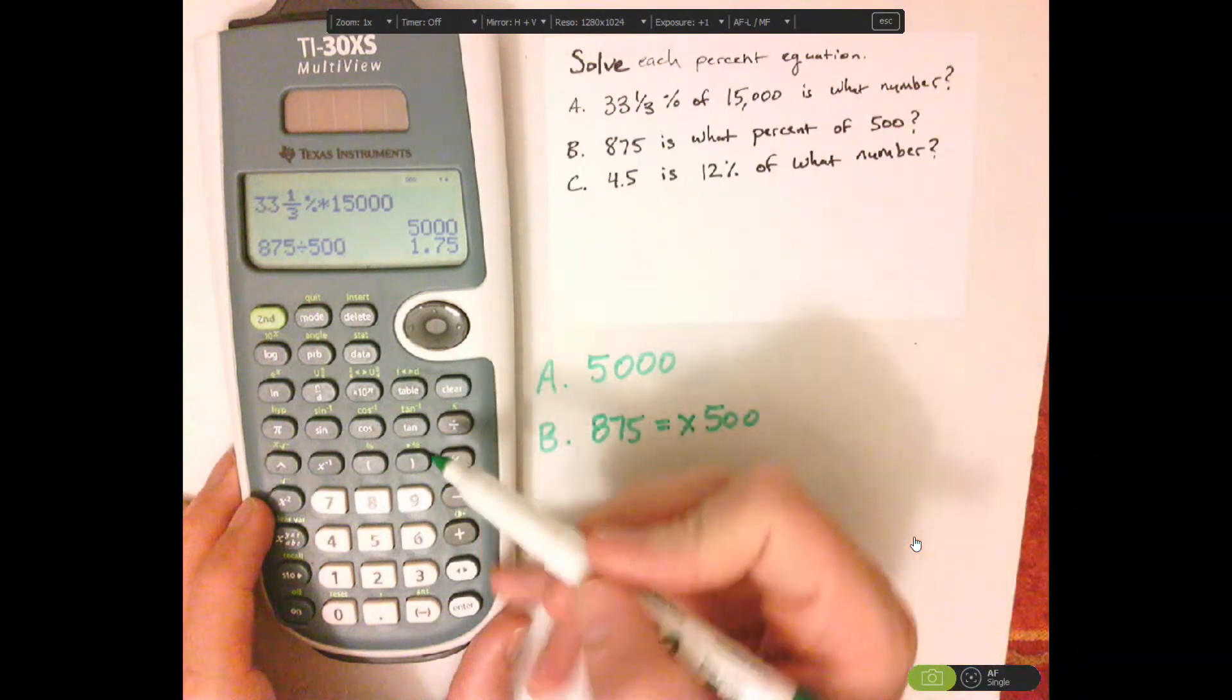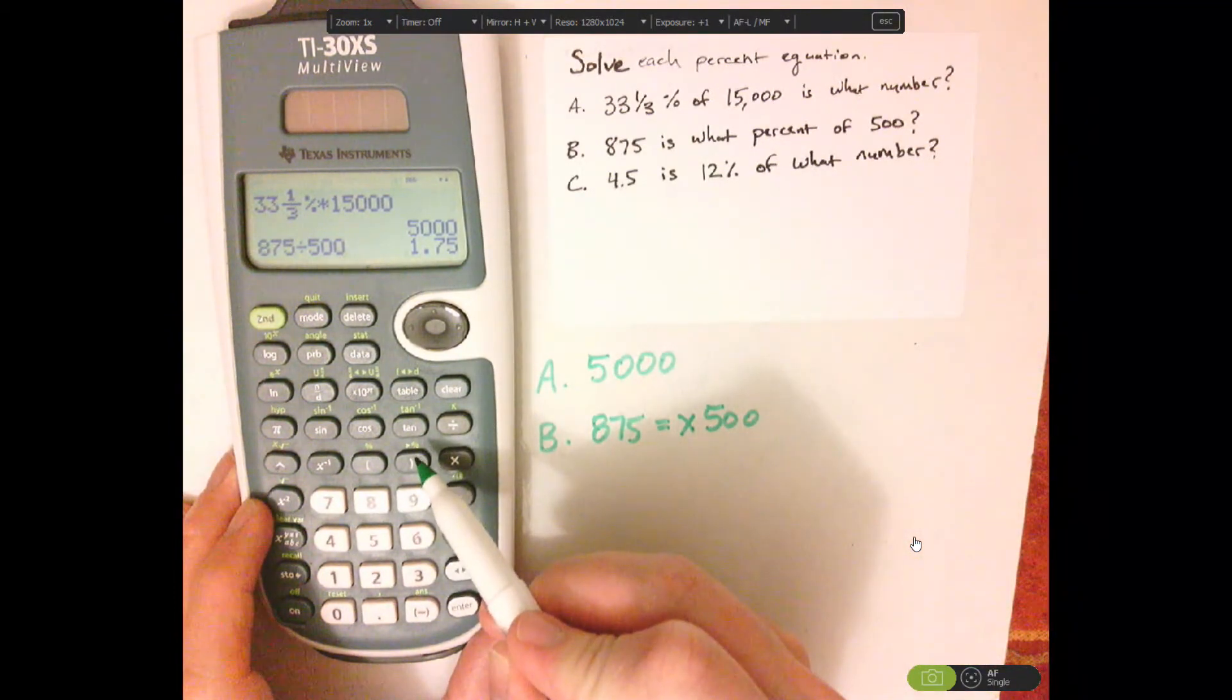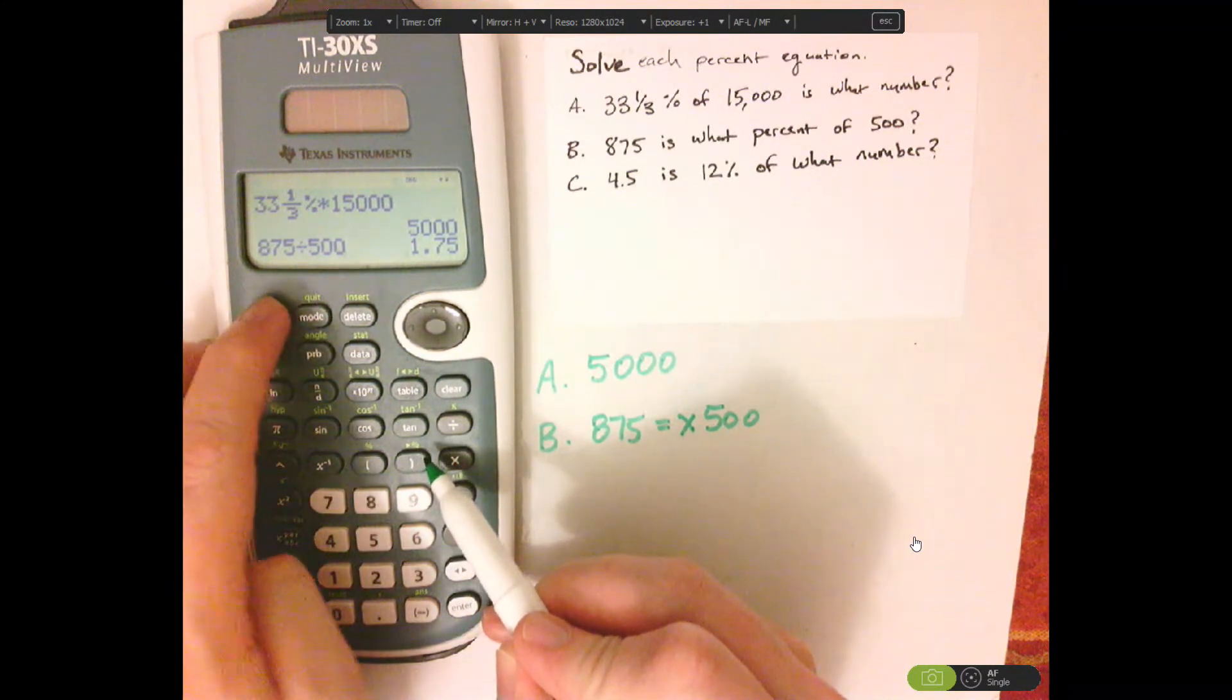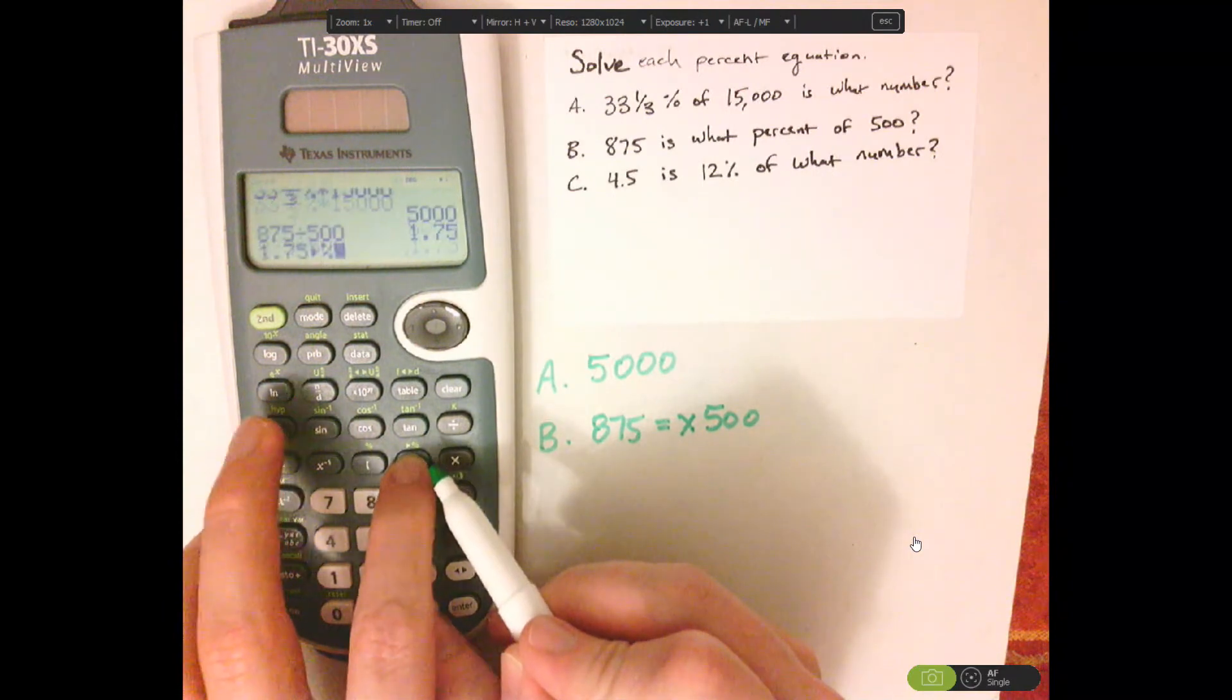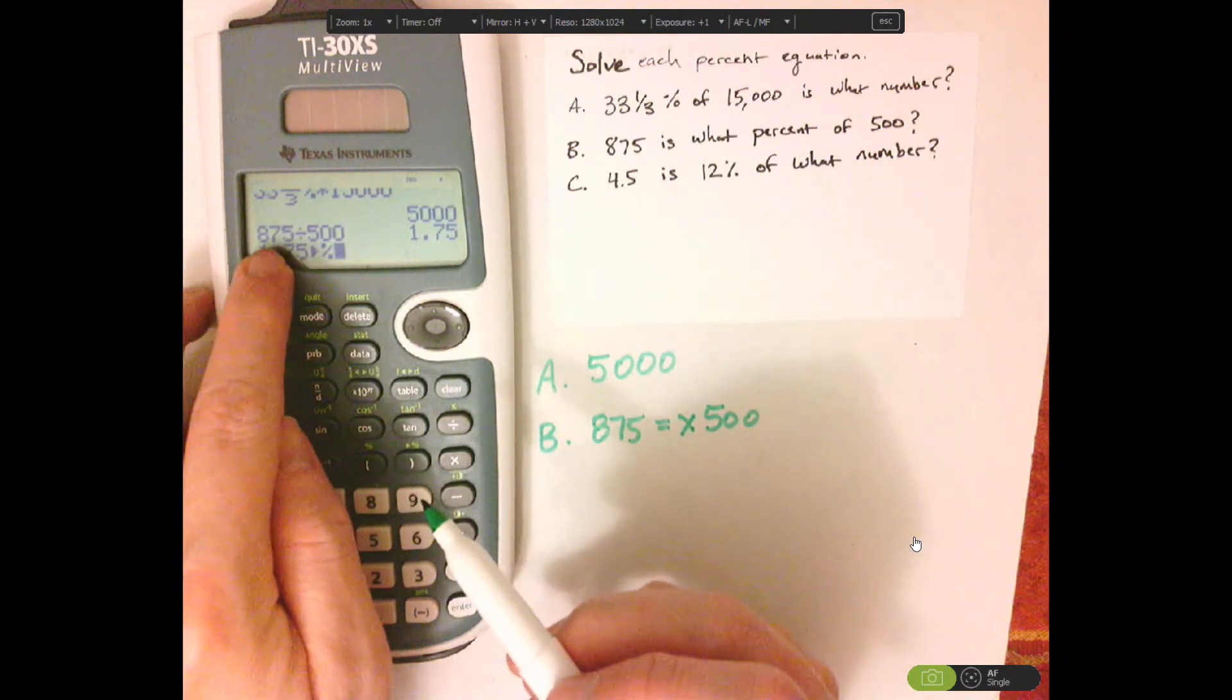and I want to convert that to a percent. So the triangle on your calculator means convert, so this would convert it to a percent. So push 2nd, and then the right parenthesis.